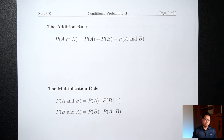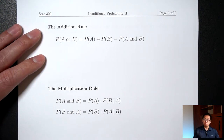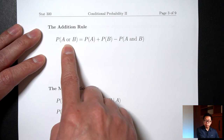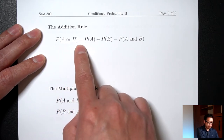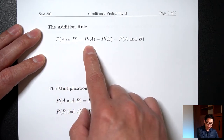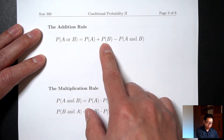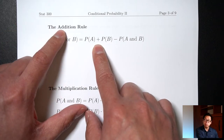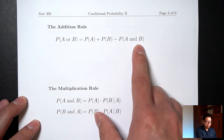Let's now talk about some formulas. The first formula is called the addition rule and it's a formula for finding OR probabilities. Probability of A or B is equal to probability of A plus probability of B — that's where the name 'addition' comes from — minus the probability of A and B.